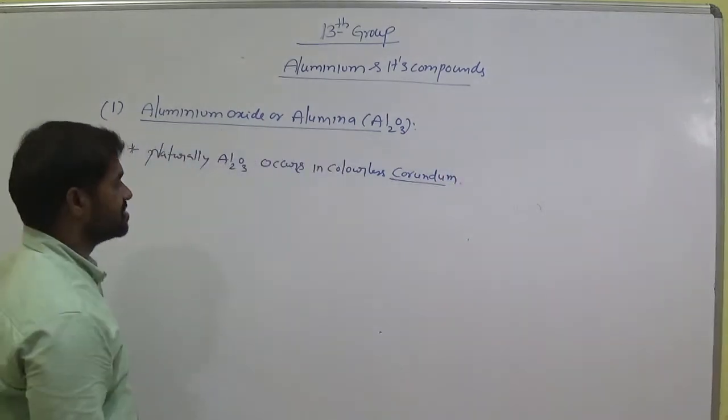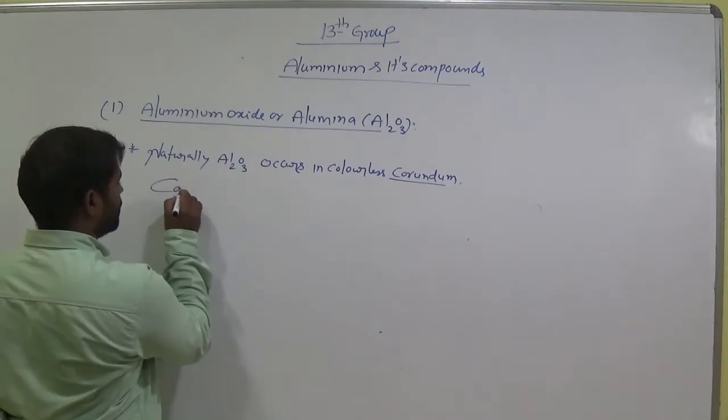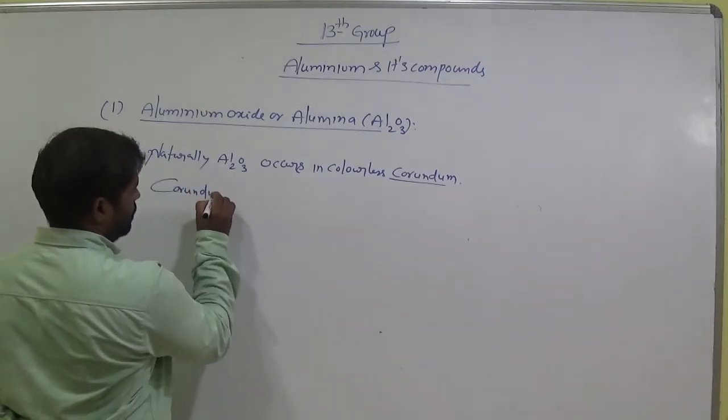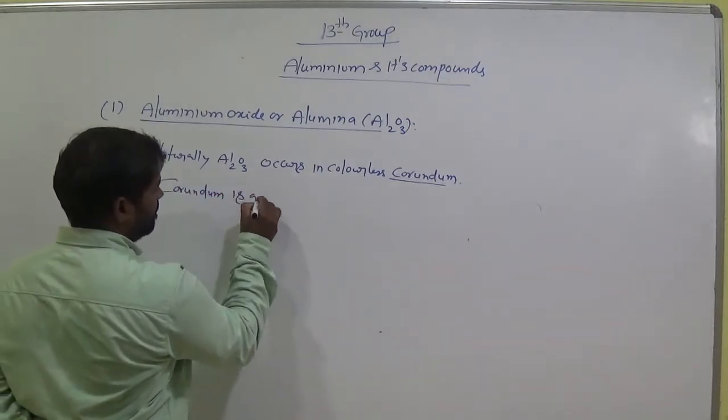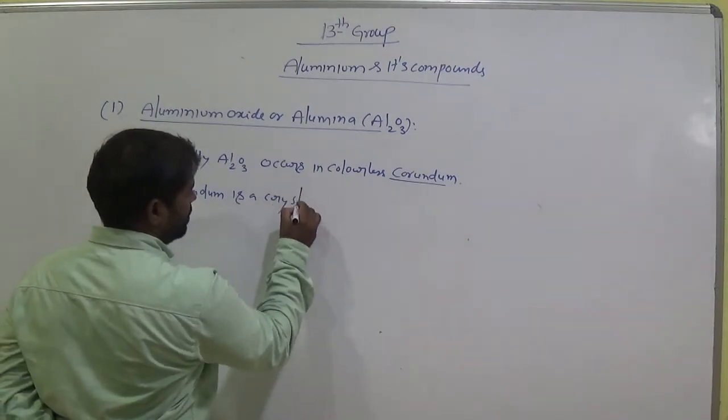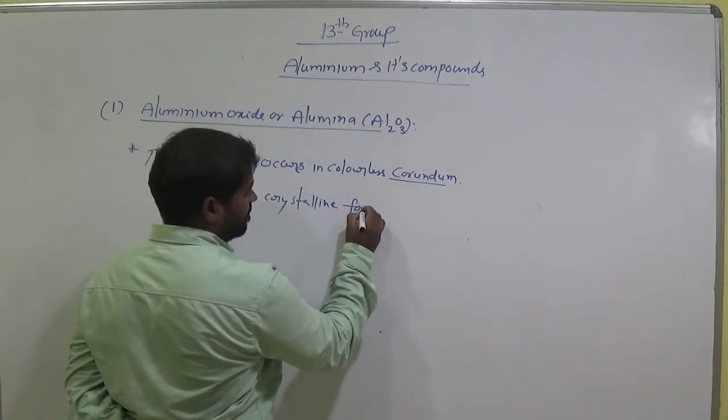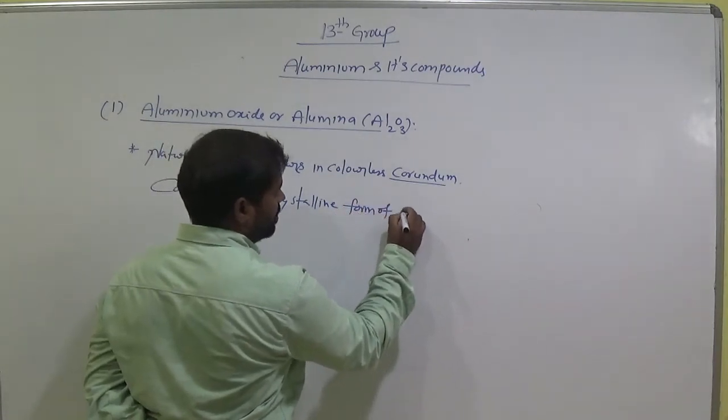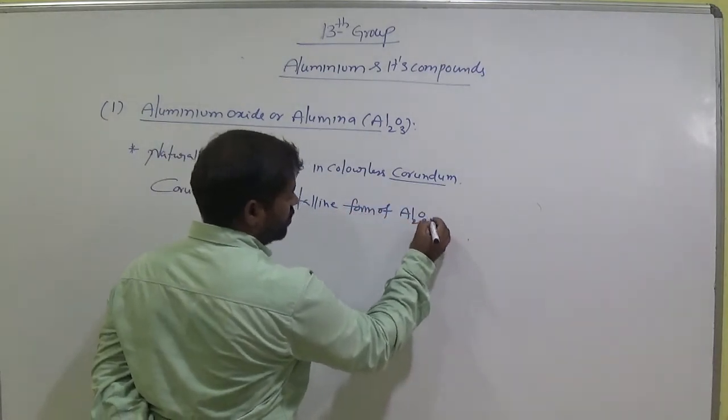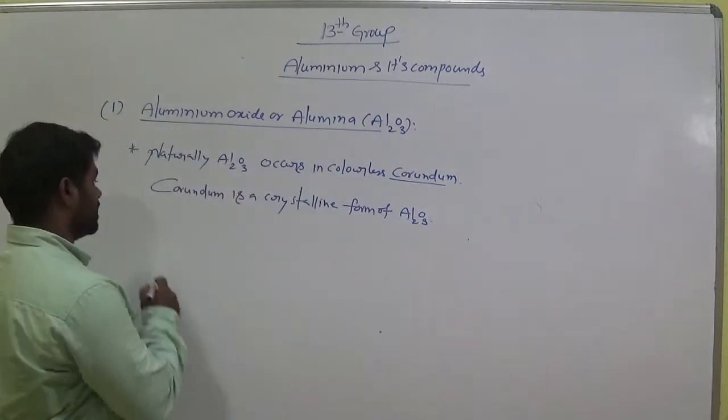Corundum is a crystalline form of Al₂O₃, Aluminium oxide.